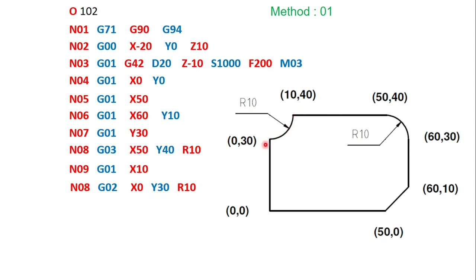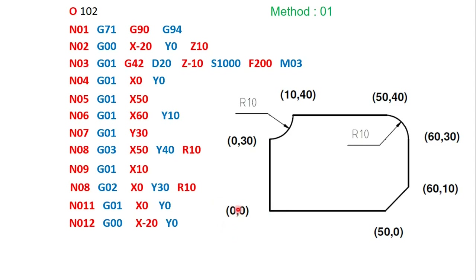After the clockwise arc to X0, Y30, linear interpolation G01 completes the final straight segment back along the profile. Then the tool moves away from the workpiece to X minus 10, and is raised 20mm above the workpiece in Z. M05 stops the spindle, and M30 ends the program. The complete milling operation along the workpiece profile is now finished.